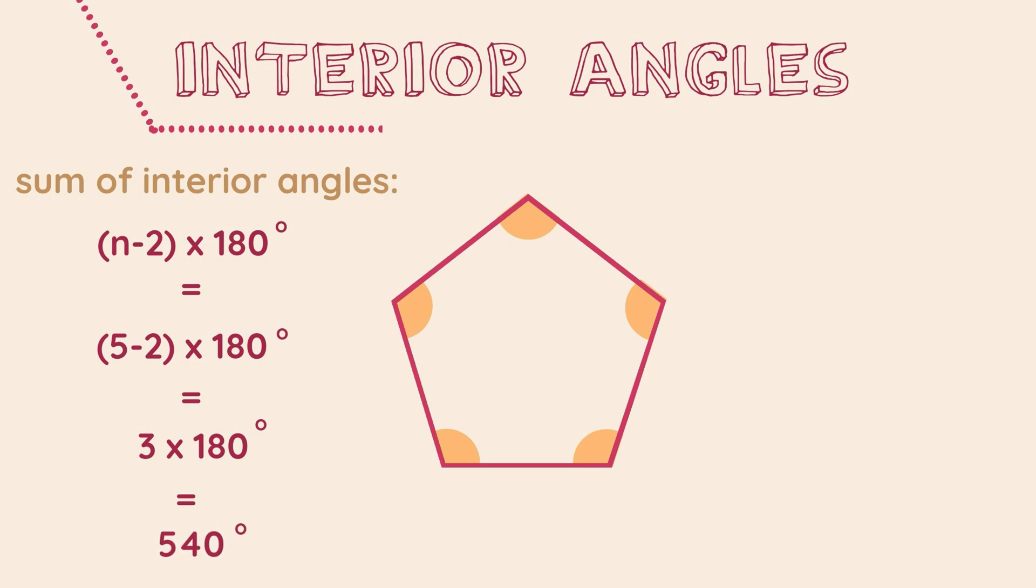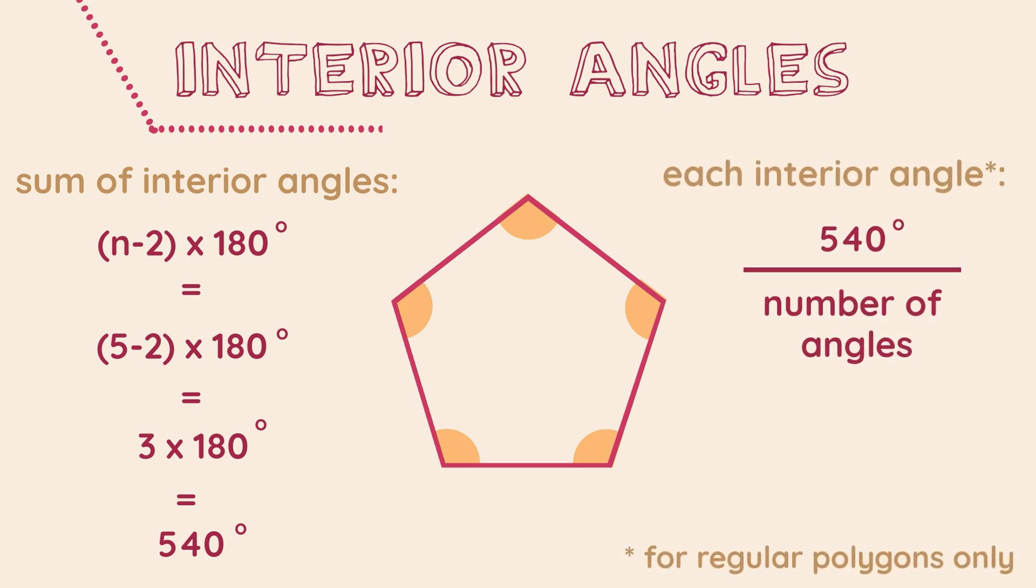Using this knowledge, we can also calculate each individual interior angle, as long as the shape is a regular polygon, where all angles will be equal. We do this by dividing our answer for the sum of interior angles by the number of angles or sides of that shape. For example, as this is a five-sided shape, we can divide 540 degrees by 5. Therefore, each angle of a pentagon is 108 degrees.